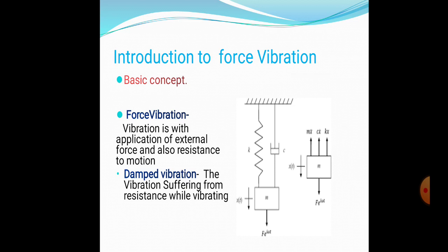Before going to forced vibrations, here are the basic definitions. Forced vibration is the vibration with the application of some external force along with resistance to the motion. In the figure shown here, k is the spring stiffness, c is the coefficient of the damper, x(t) is the displacement of the mass with time, and F·e^(iωt) is the external force being applied to the system.